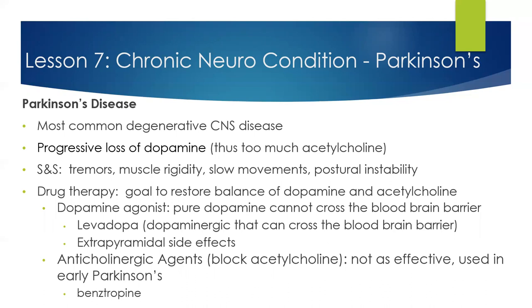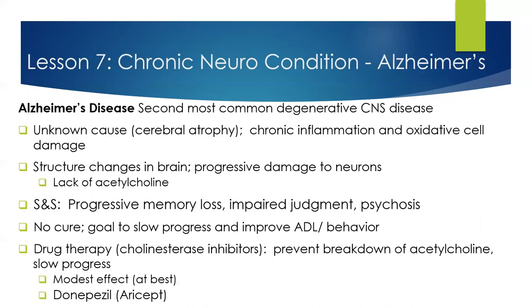The goal of medications with Parkinson's is to help increase the level of dopamine. Levodopa crosses the blood-brain barrier. The last neural condition is Alzheimer's disease — the second most common degenerative central nervous disease, with an unknown cause. Chronic inflammation and oxidative cell damage are how it usually presents, with structural changes in the brain from lack of acetylcholine, progressively damaging neurons. Signs and symptoms include progressive memory loss, impaired judgment, and psychosis. There's really no cure — medication may only help symptoms for a little while, slowing progression and improving activities of daily life and behavior.